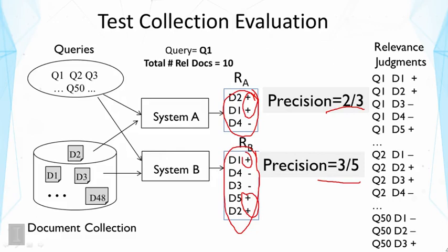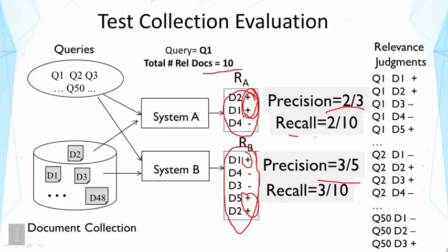But we also talked about system B might be preferred by some other users who like to retrieve as many relevant documents as possible. So in that case, we'll have to compare the number of relevant documents they retrieve. And there is another measure called recall. This measures the completeness of coverage of relevant documents in your retrieved result. So we just assume that there are 10 relevant documents in the collection. And here we've got two of them in system A. So the recall is 2 out of 10. Whereas system B has got 3. So it's 3 out of 10. Now we can see by recall, system B is better. And these two measures turn out to be the very basic measures for evaluating search engines.